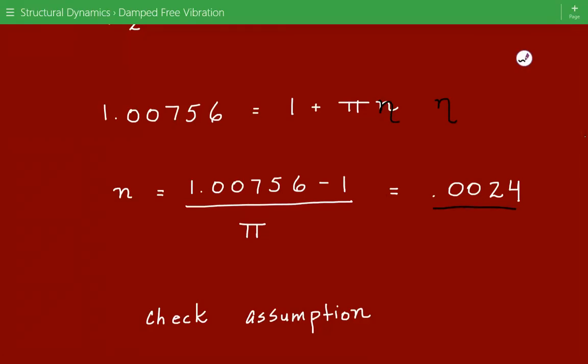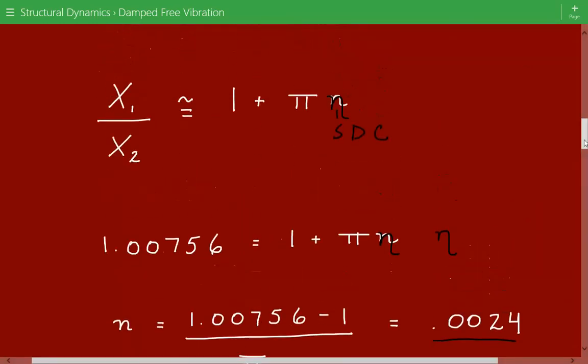And so we can see that this value is quite small, so our assumption is valid and we can use this relationship.